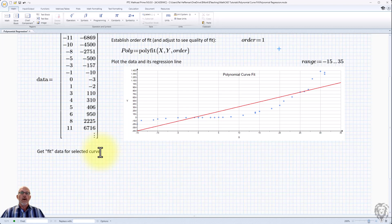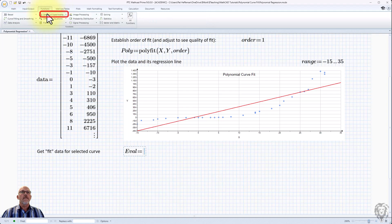So that polyfit c function will give you a lot of the statistical analysis associated with that regression. And so what we're going to do is we're going to set up another variable, call it eval as equal to, we're going to do polyfit c functions, design of experiments, polyfit c, and again,